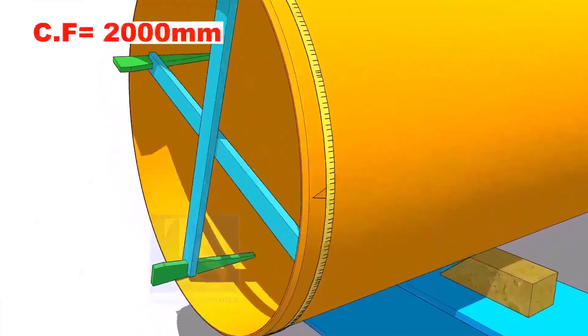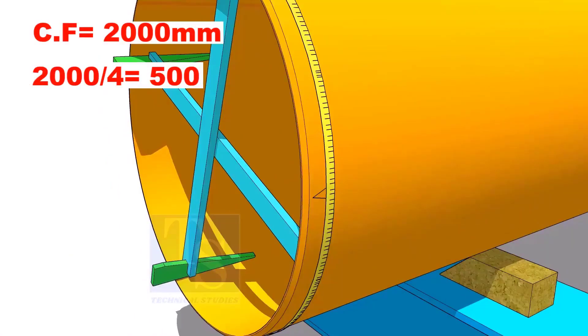Assume that the circumference is 2000 millimeters. Divide it by four. Now you have the arc length of 90 degrees.